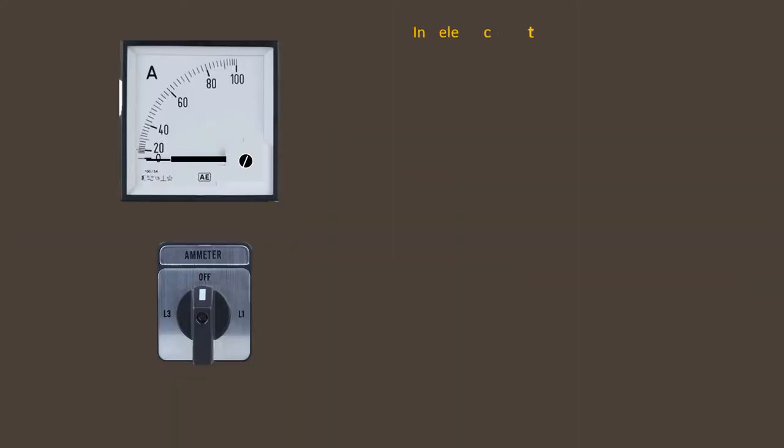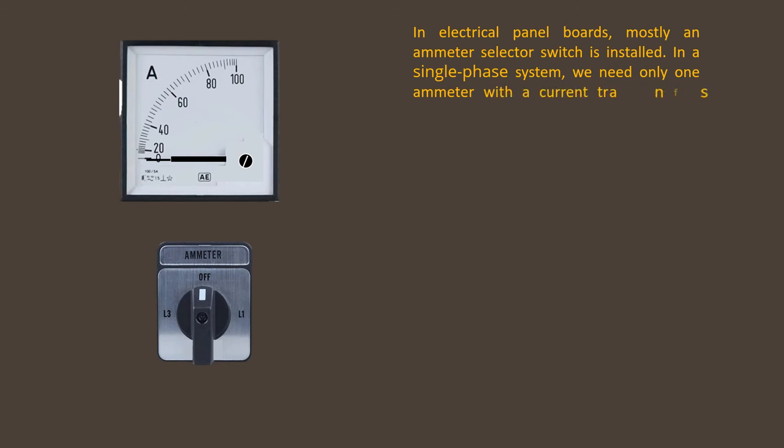In electrical panel boards, mostly an ampere selector switch is installed. In a single phase system, we need only one ammeter with a current transformer to meter the total load in amperes.